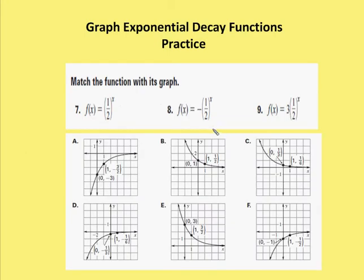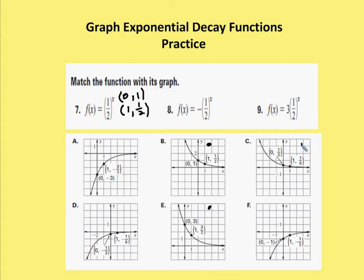Now we're going to match graphs with functions. We substitute values for x to find y, then identify where those points appear in the given graphs. For y = (1/2)^x: at x = 0, (1/2)^0 = 1, giving point (0, 1). At x = 1, (1/2)^1 = 1/2, giving point (1, 1/2). This is a decay function, and I can see points (0,1) and (1, 1/2) in graph B, so this function matches graph B.